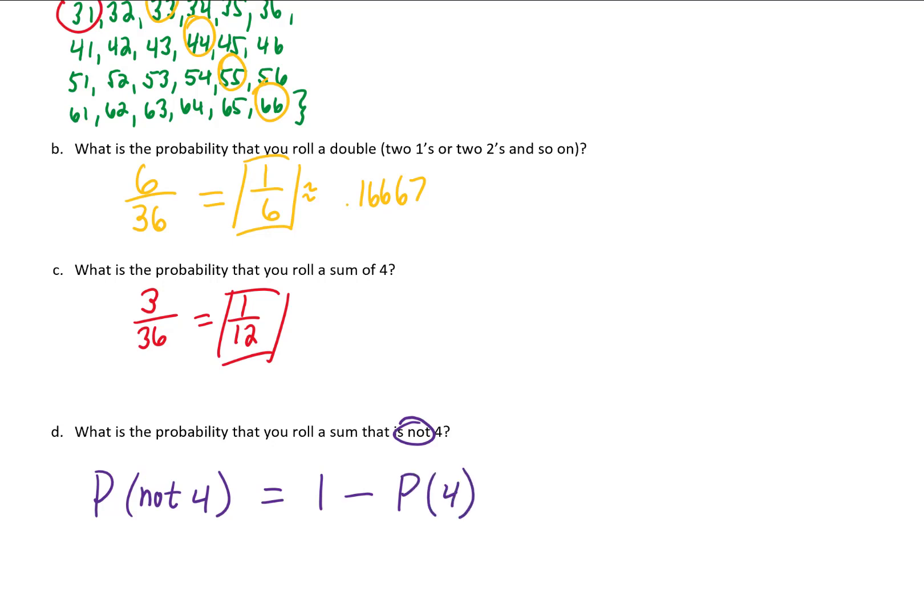Oh, so I probably should have been using good notation up here. In part B, we found the probability of a double. In part C, we found the probability of rolling a sum of four. So anyway, back to this problem. The probability of not rolling a sum of four should be 1 minus the probability of rolling a sum of four. We already calculated that probability as 1 twelfth.